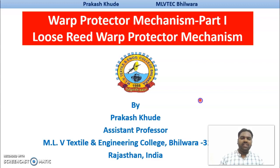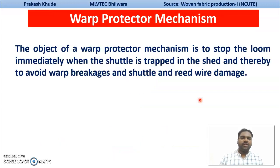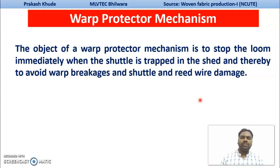We will see what is the basic function or objective of your warp protector mechanisms. Warp protector mechanisms are basically used when we need to stop your loom when the shuttle has been trapped in between sheds. During your shuttle trap, there could be chances of multiple warp breakages, and there could also be chances that the shuttle and reed warp damage can occur.